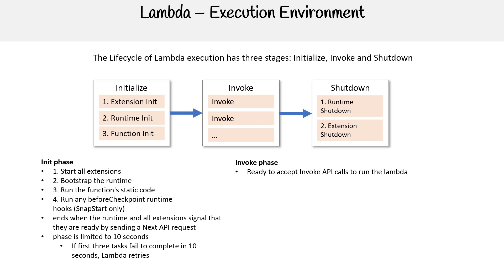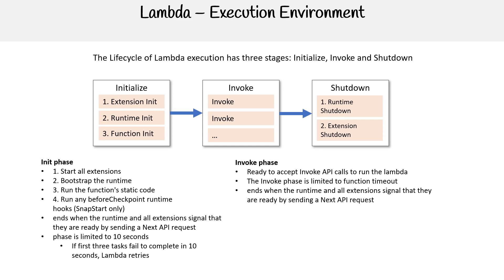We have the invoke phase — this is when you are actually invoking your function, ready to accept invoke API calls to run the Lambda. The invoke phase is limited to the function timeout, and when that runs out it's done. It ends when the runtime and all extensions signal that they are ready by sending the next API request.